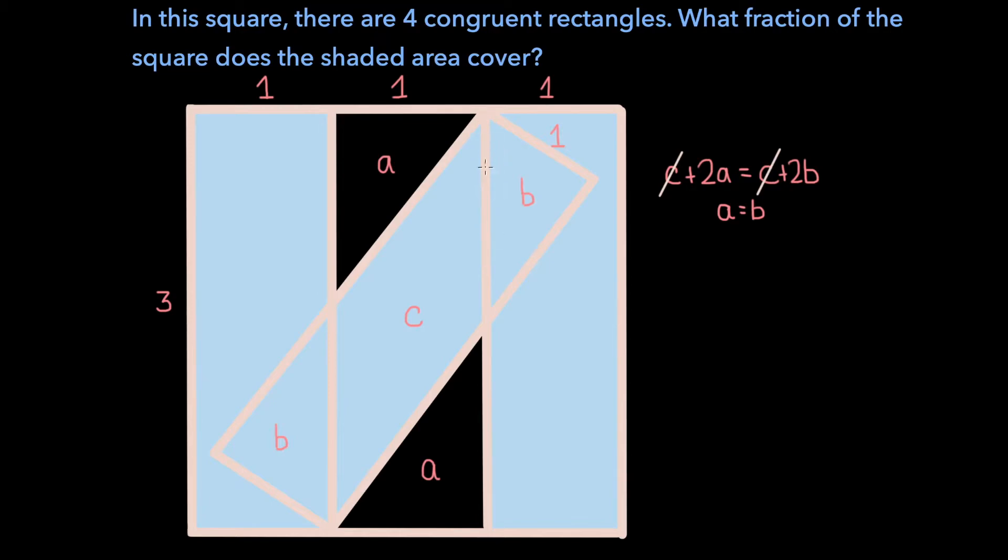And so if we call the hypotenuse of the triangle with area B, x, then we can apply the Pythagorean theorem on this triangle to find the length of the remaining side. And we can do this because these are 90 degree angles. And so if the hypotenuse is of length x and this leg is of length 1, then the remaining leg in this triangle must be of length root x squared minus 1.